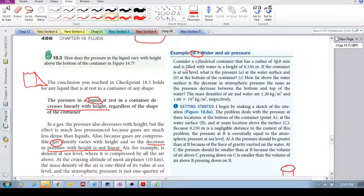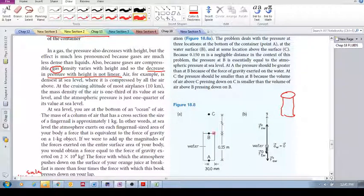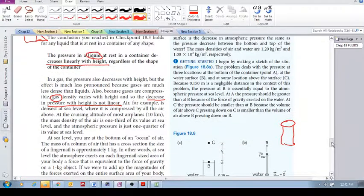It has a radius of 13 mm and is filled with water to a height of 150 mm. If the container is at sea level, what is the pressure at the surface of the water and at the bottom of the container? What is the pressure at the surface and what is the pressure at the bottom? That is the first question.